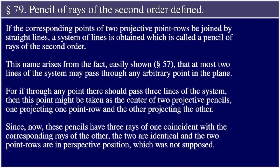This name arises from the fact, easily shown in Section 57, that at most two lines of the system may pass through any arbitrary point in the plane. For if through any point there should pass three lines of the system, then this point might be taken as the center of two projective pencils, one projecting one point row and the other projecting the other.